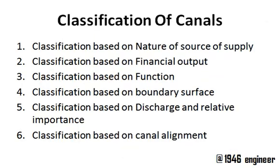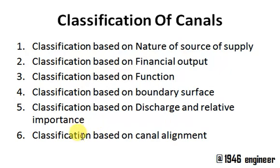Canals can be classified depending upon six factors: classification based on nature of source of supply, classification based on financial output, classification based on function, classification based on boundary and surface, classification based on discharge and relative importance, and classification based on canal alignment. We are going to discuss each individually.